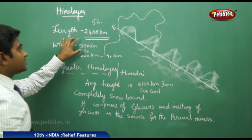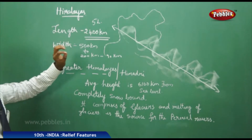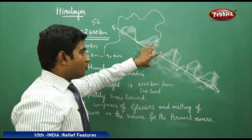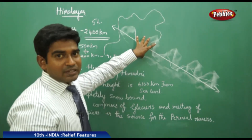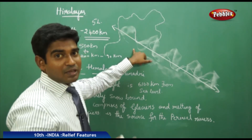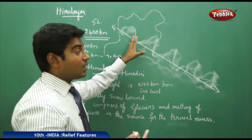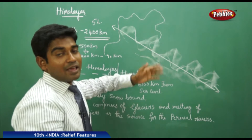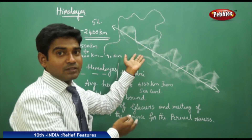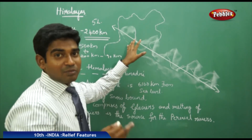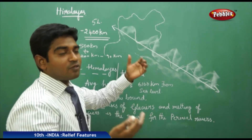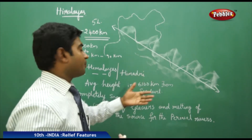The Himalayas are the largest young folded mountains in the world today. These are the youngest folded mountains we have, formed nearly 70 million years ago, while mountains in other parts of the world are older mountains.